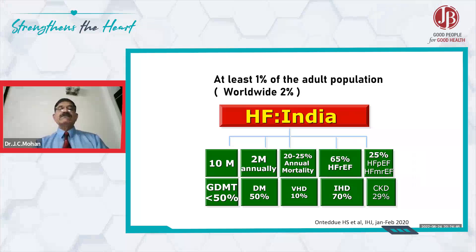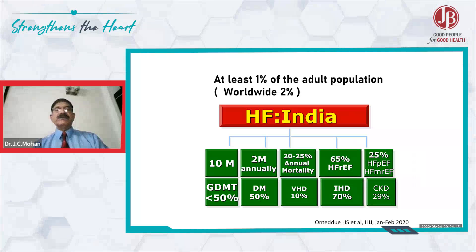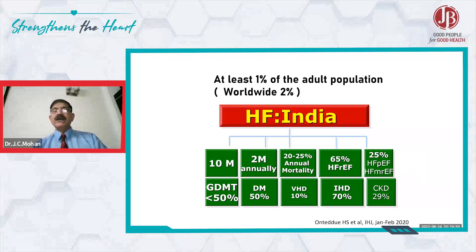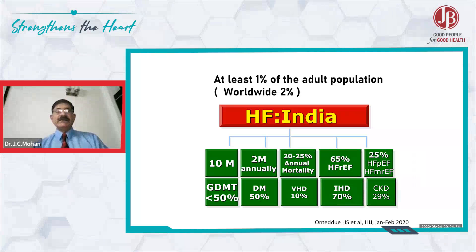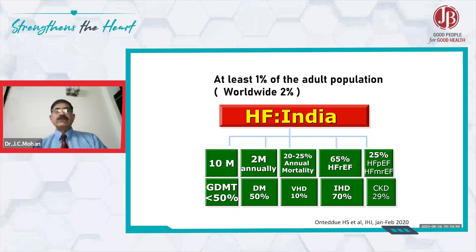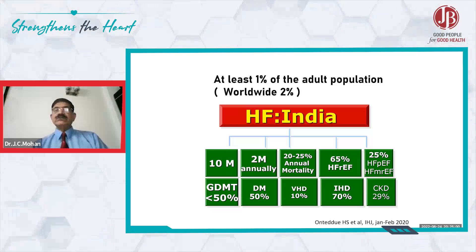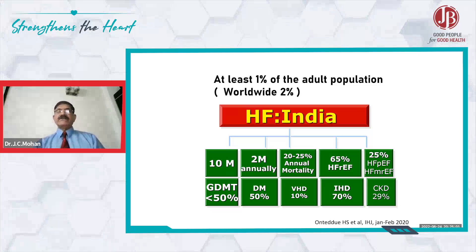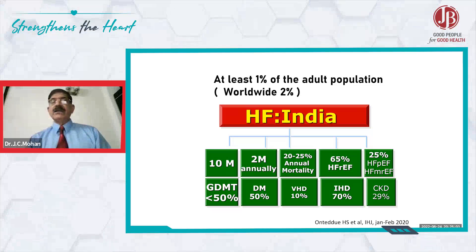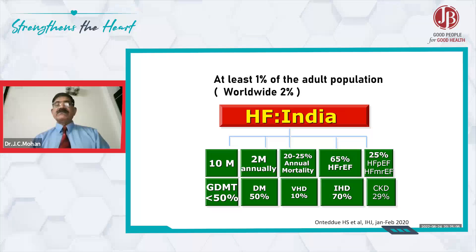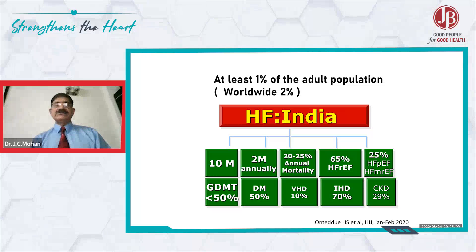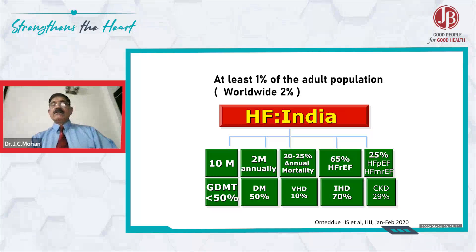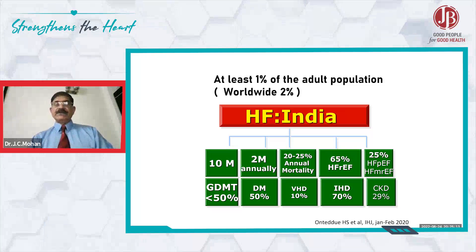One percent of the entire adult population in India probably has heart failure. By that logic, 10 million people have heart failure, and 2 million are added annually at least. Annual mortality is 20 to 25 percent. Two-thirds of our patients have heart failure with reduced ejection fraction, probably 25 percent have heart failure with preserved or mildly reduced ejection fraction, and 50 percent of our patients have diabetes.